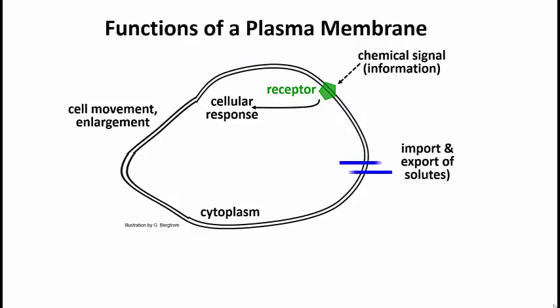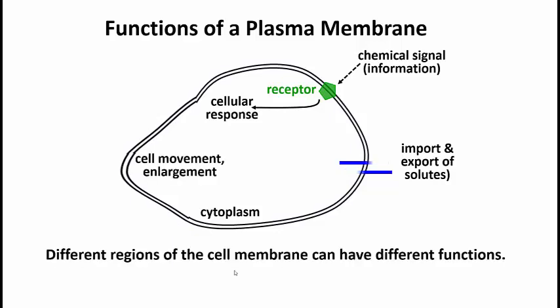There are proteins which are involved in either import or export of molecules. In this kind of cell you might expect to find such proteins pretty well evenly diffused around the surface of the cell membrane. But different regions of the cell membrane can have different functions, including recognizing molecules in the external environment and recognizing other cells to know which cells to associate with and form tissues.